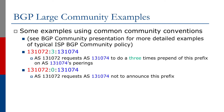Some examples showing common large community conventions — to be covered in more detail later in this series. For example, 131072:3:131074 might mean AS 131072 requesting AS 131074 to perform a three-times prepend of this prefix on AS 131074's peerings. Or 131072:0:131074 means AS 131072 requests AS 131074 not to announce this prefix at all — using common conventions for what policy numbers mean in BGP large communities.